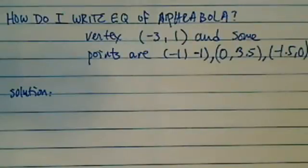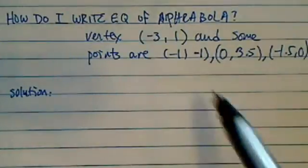Writing an equation for a parabola given that vertex is minus 3 and 1, and some points are given over here.